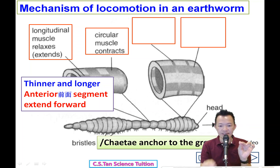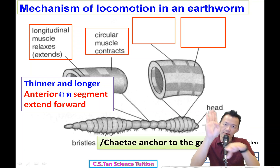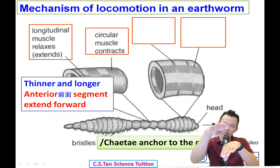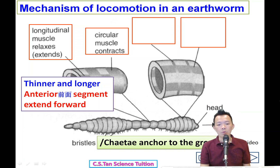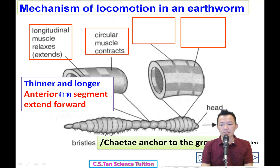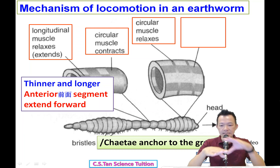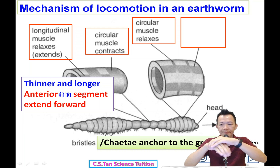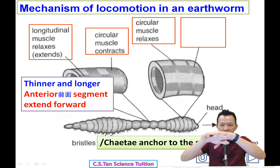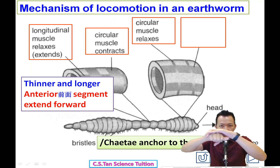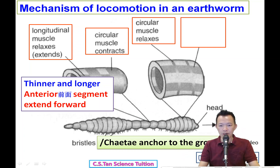The setae anchor to the ground, hooking onto the surface. After this, the circular muscle relaxes, and the longitudinal muscle contracts — shortening the body.